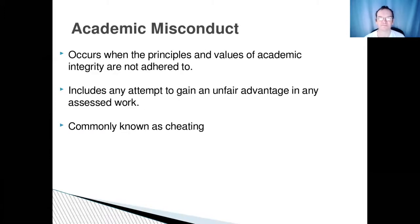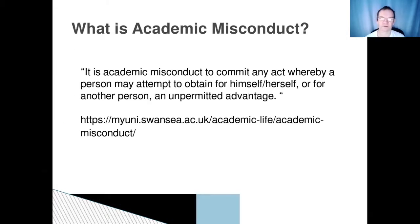Academic misconduct occurs when the principles and values of academic integrity are not adhered to, and this includes any attempt to gain an unfair advantage in any assessed work. Basically, what we're talking about here is cheating. The university's definition is that it is academic misconduct to commit any act whereby a person may attempt to obtain for himself, herself, or any other person an unpermitted advantage. There's a link to the MyUni site where the full regulations are laid out.